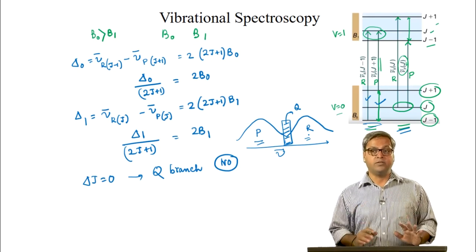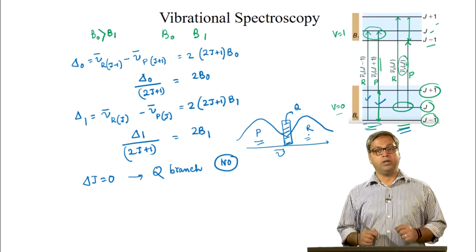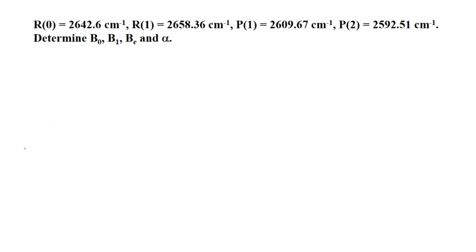This brings us to the end of this lecture; we will end by solving one problem. The frequencies for R0, R1, P1, and P2 are given. In this problem, we have been asked to determine B0 — the rotational constant associated with the V=0 level — B1, BE, and alpha.